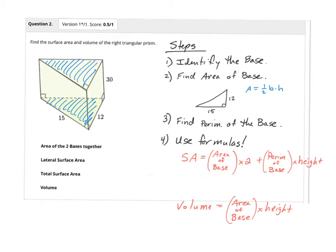Once you identify the base, find the area of the base. The area of that triangle is found by doing one-half base times the height. The height we're referring to is the height of this triangle. The height is 12, and the base is 15.